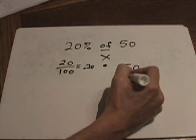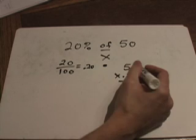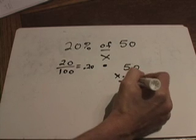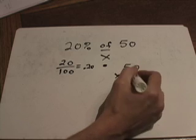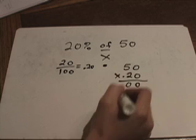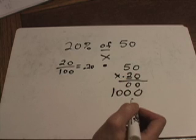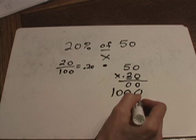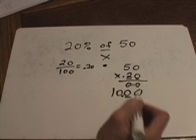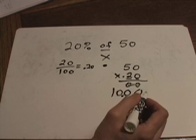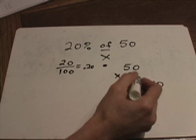If you know how to multiply decimals, we're going to take 50 times 0.20 to solve this. Multiply 50 times zero to get zero — that's a placeholder step — then zero times two is zero and five times two is ten. Because there are two spots after the decimal point in the problem, there need to be two spots after the decimal point in the answer. So our answer is 10.00, or just ten.